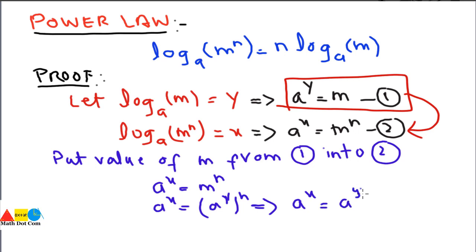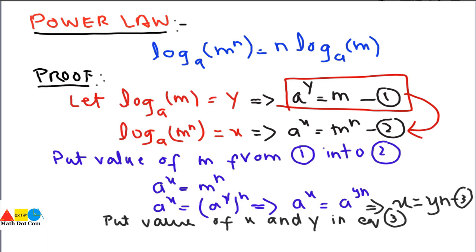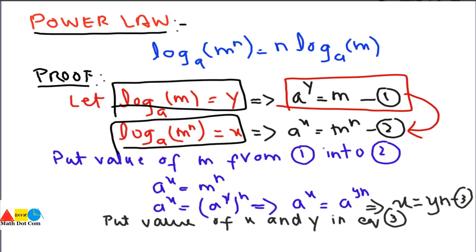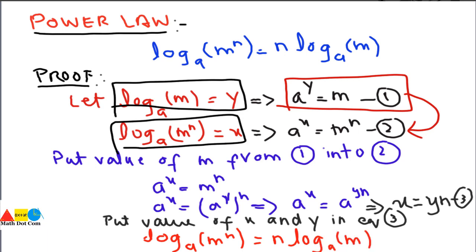Substituting m = a^y into a^x = m^n gives a^x = (a^y)^n = a^(yn). Since the bases are equal, their powers are equal: x = yn. Substituting back, x = log_a(m^n) and y = log_a(m), so log_a(m^n) = n · log_a(m). This proves the power law.